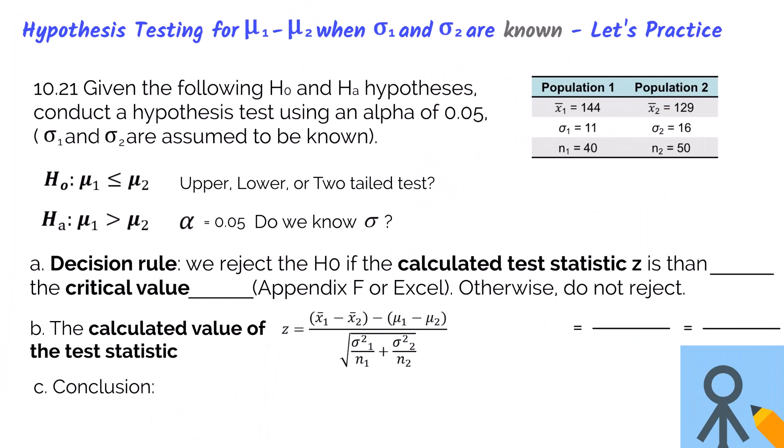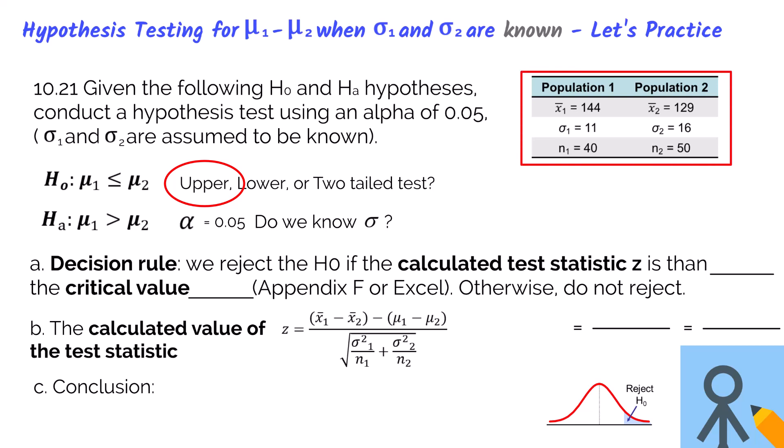Here is question 10.21 from the textbook. Given the following null and alternative hypotheses, conduct a hypothesis test using an alpha of 0.05. The population standard deviations of population one and two are assumed to be known. The alternative hypothesis is that population mean one is greater than population mean two. Since it shows the greater-than symbol pointing to the right, we know we're working with a one-tailed upper-tailed test. The alpha was given at 0.05. Looking at the table of data, we can see the sigma symbols for population one and two — therefore we know the population standard deviation, so we'll use z values for the hypothesis test.